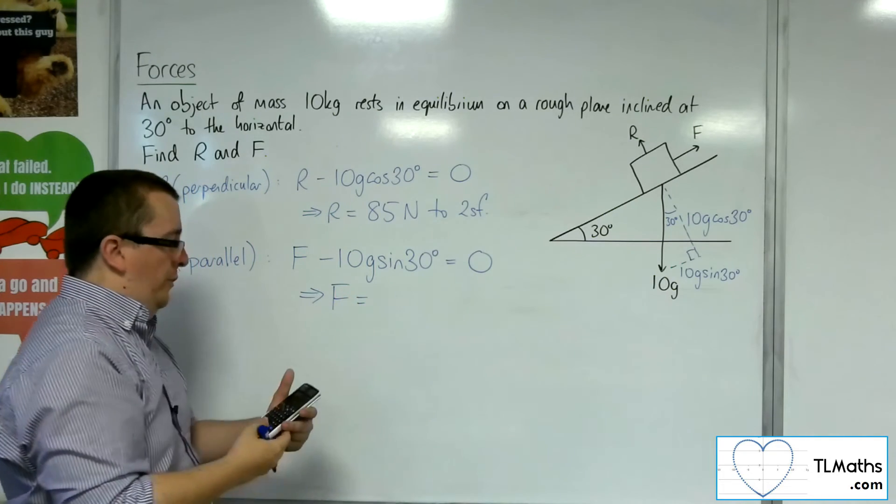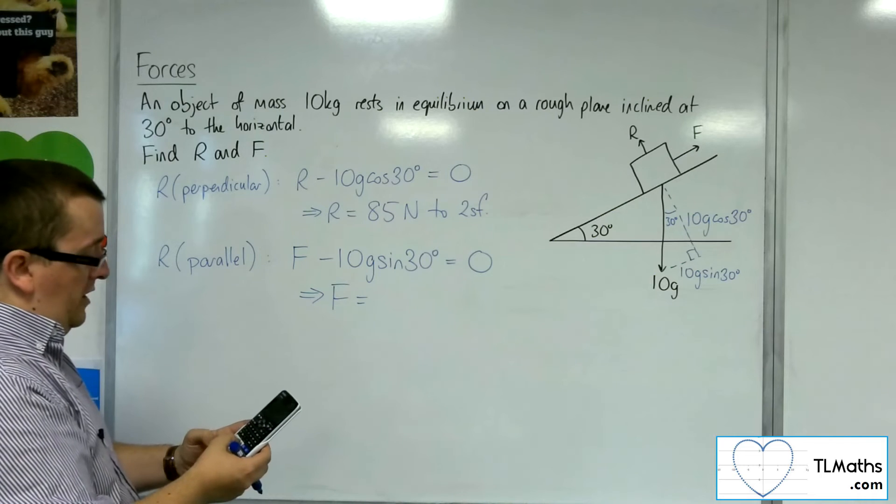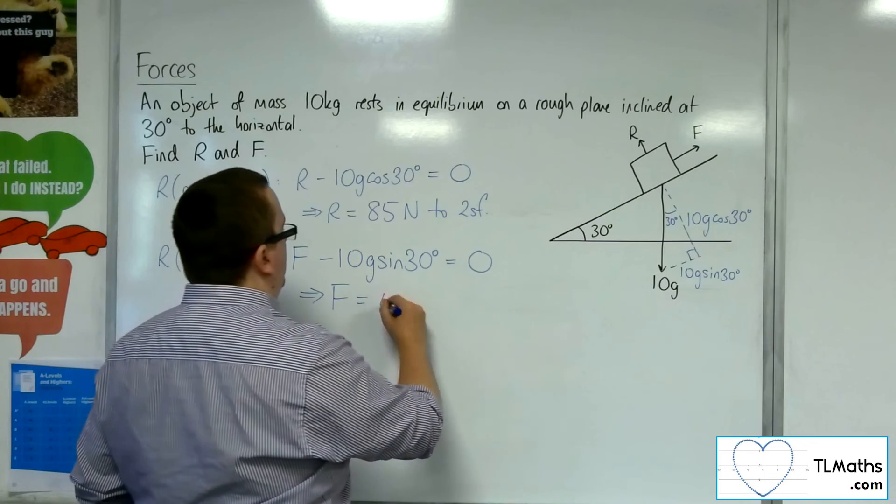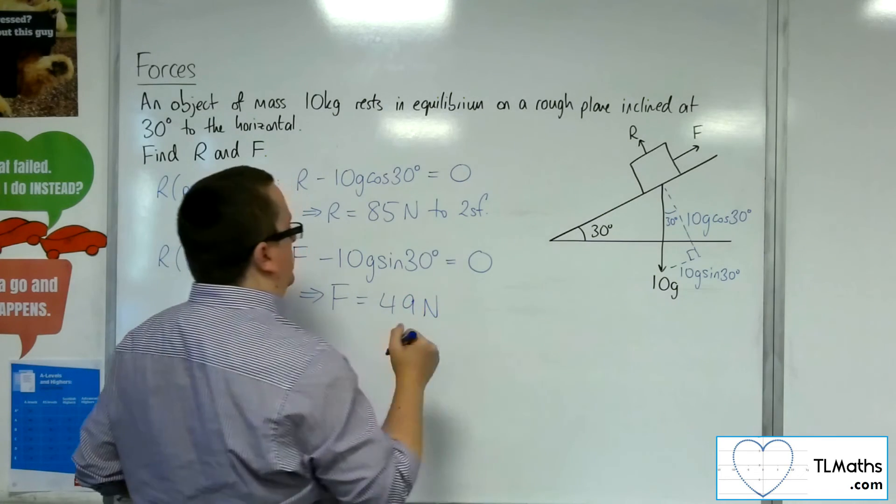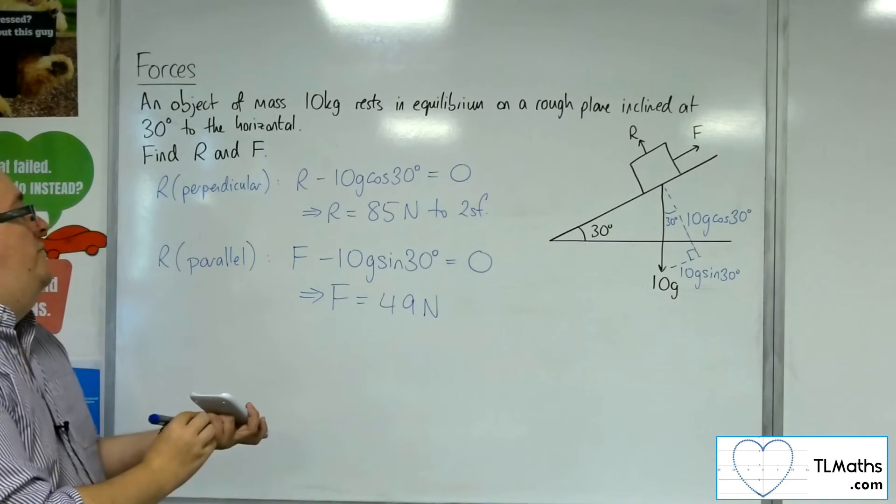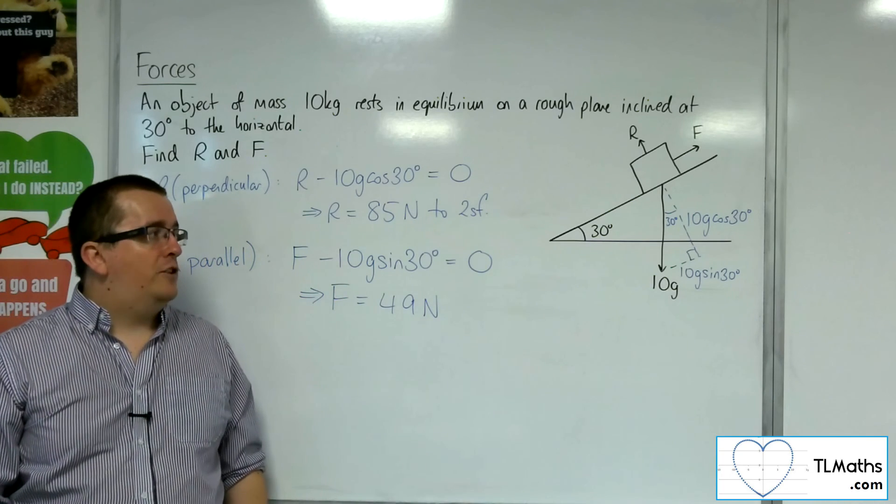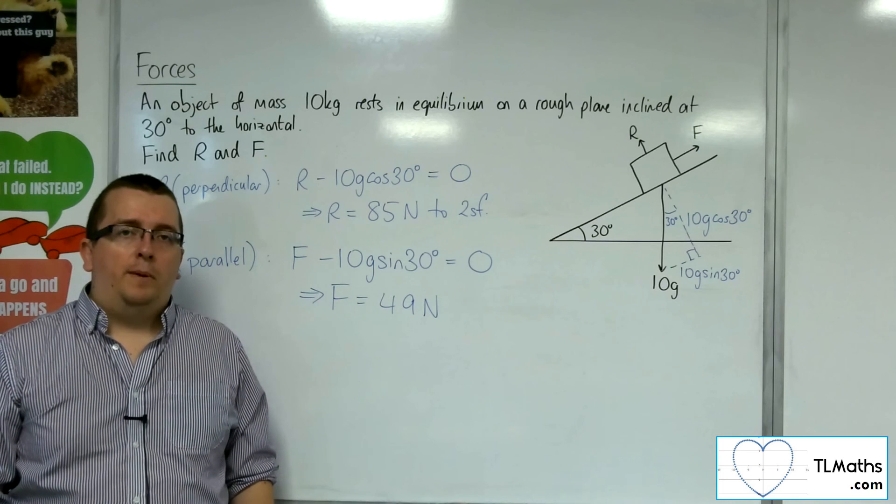And so the frictional force is just 10 times 9.8 times sine of 30, which is 49 newtons. So that is how I can work out frictional force and the normal reaction force for this object on a rough inclined plane.